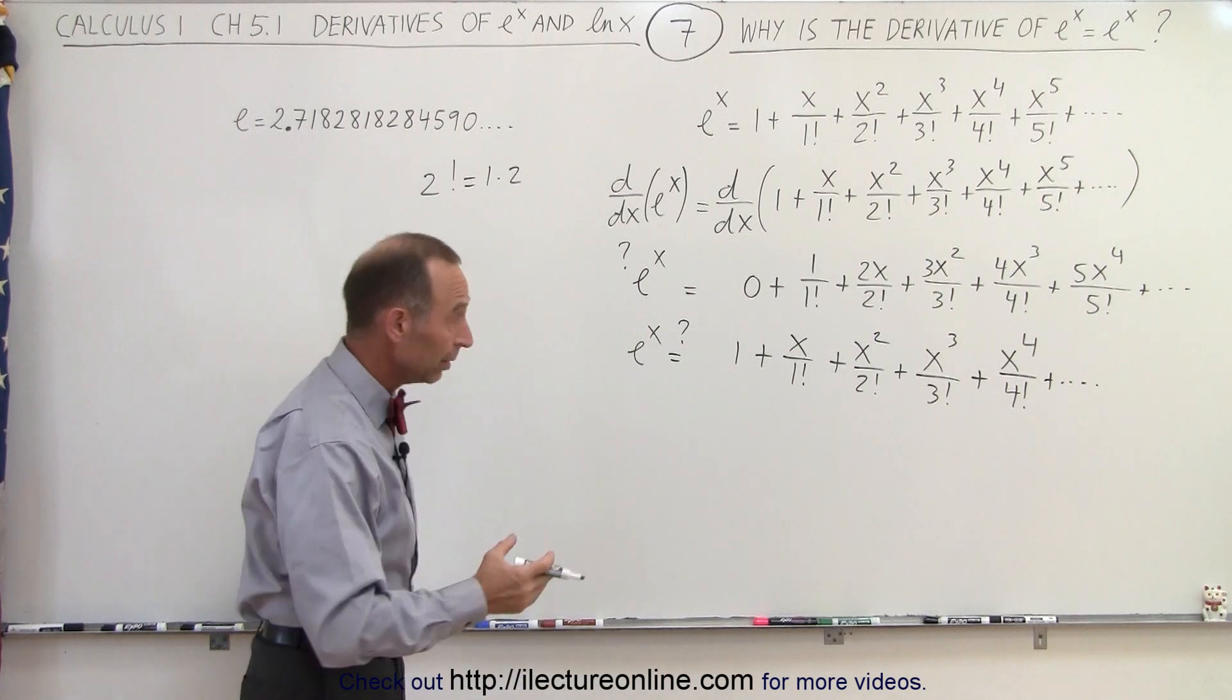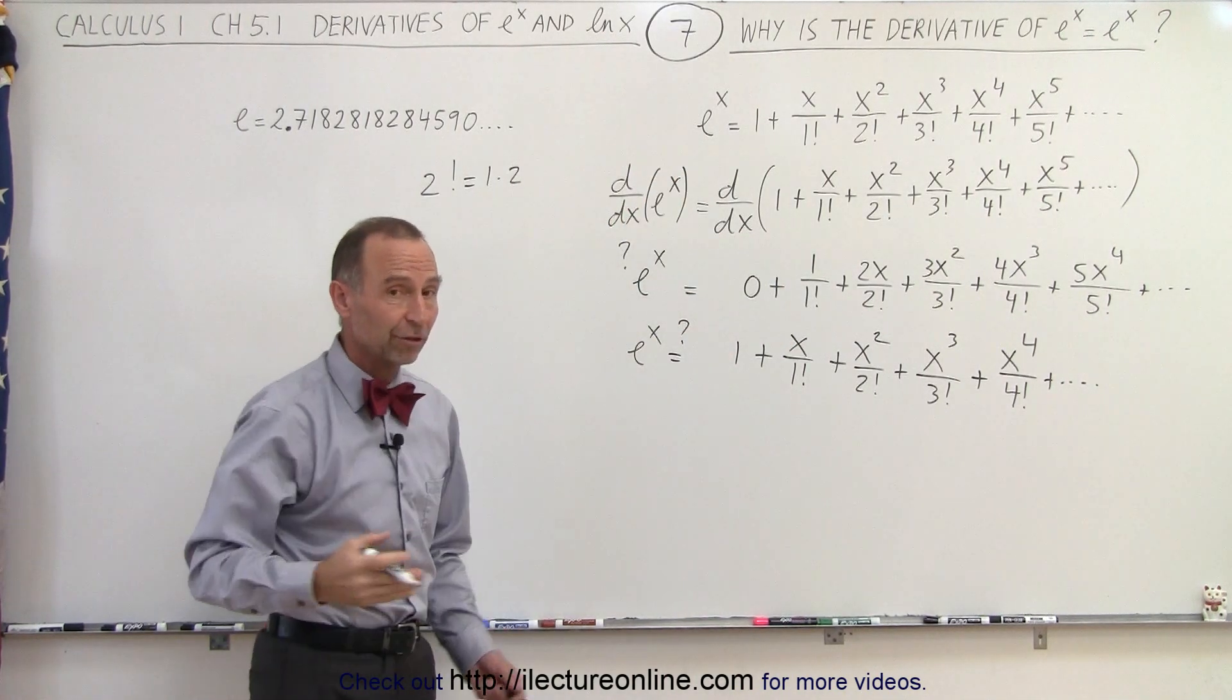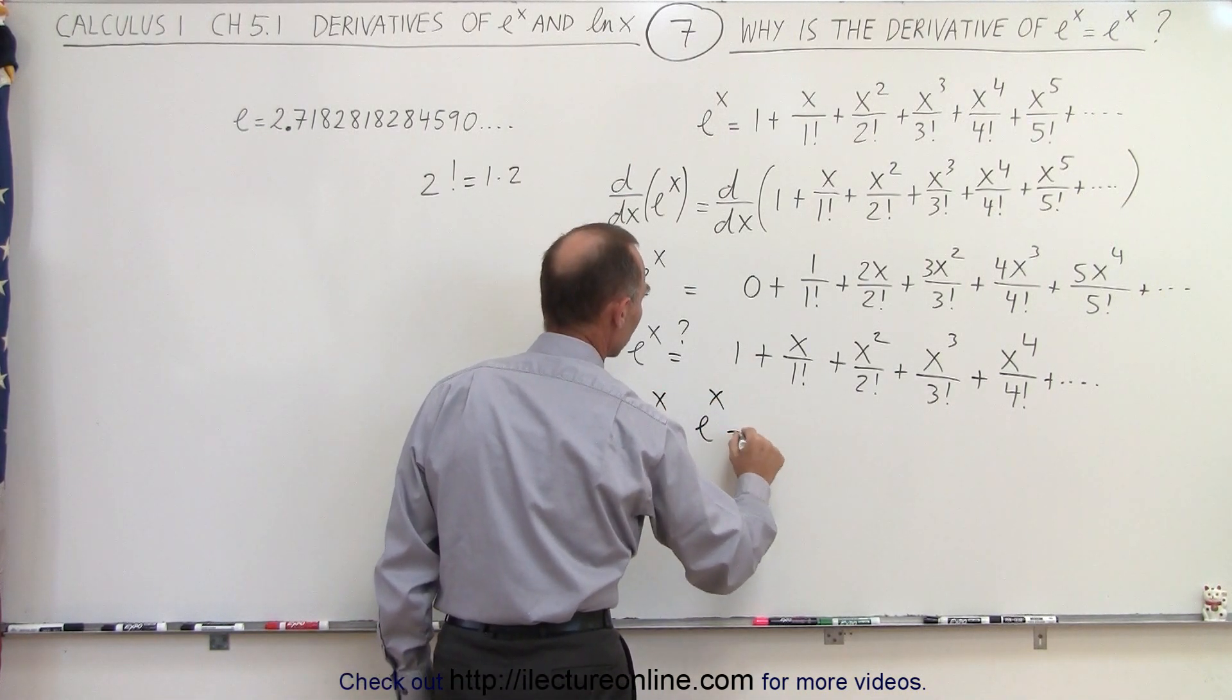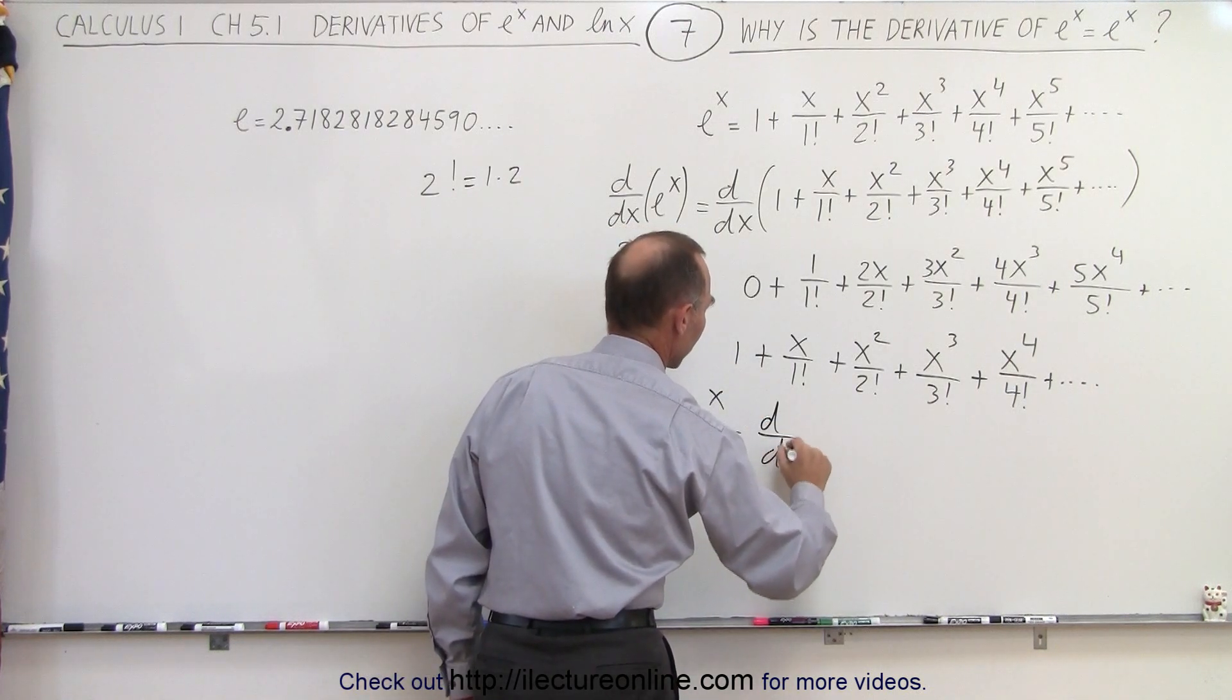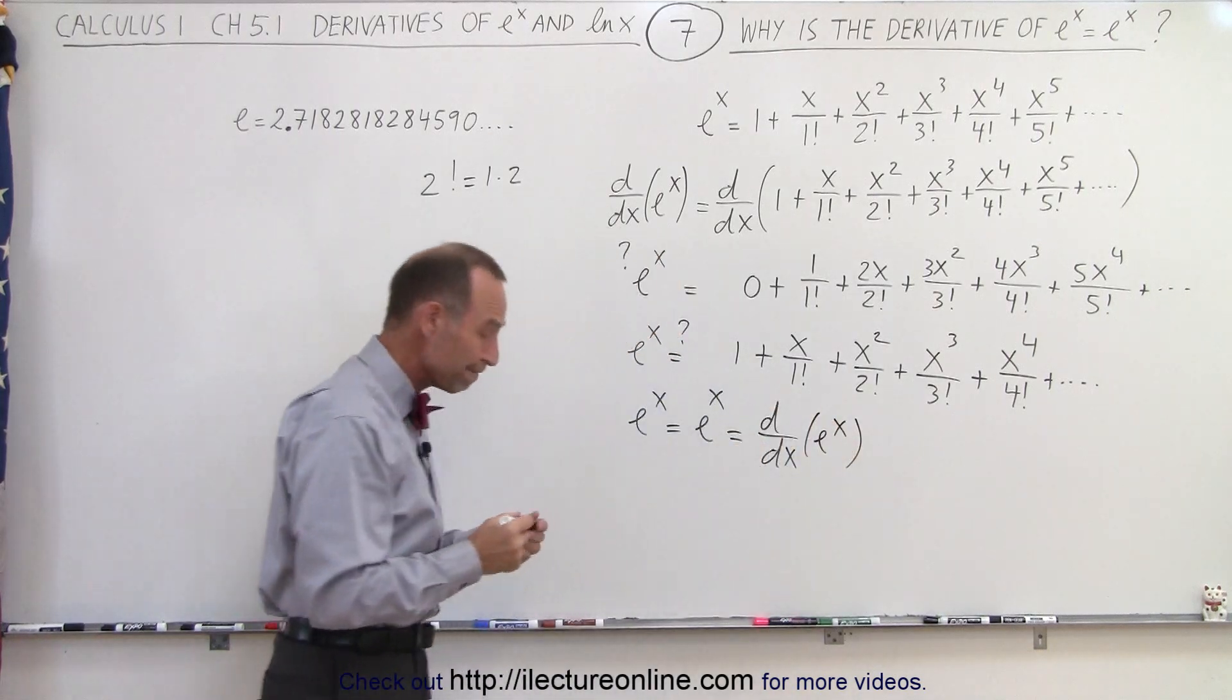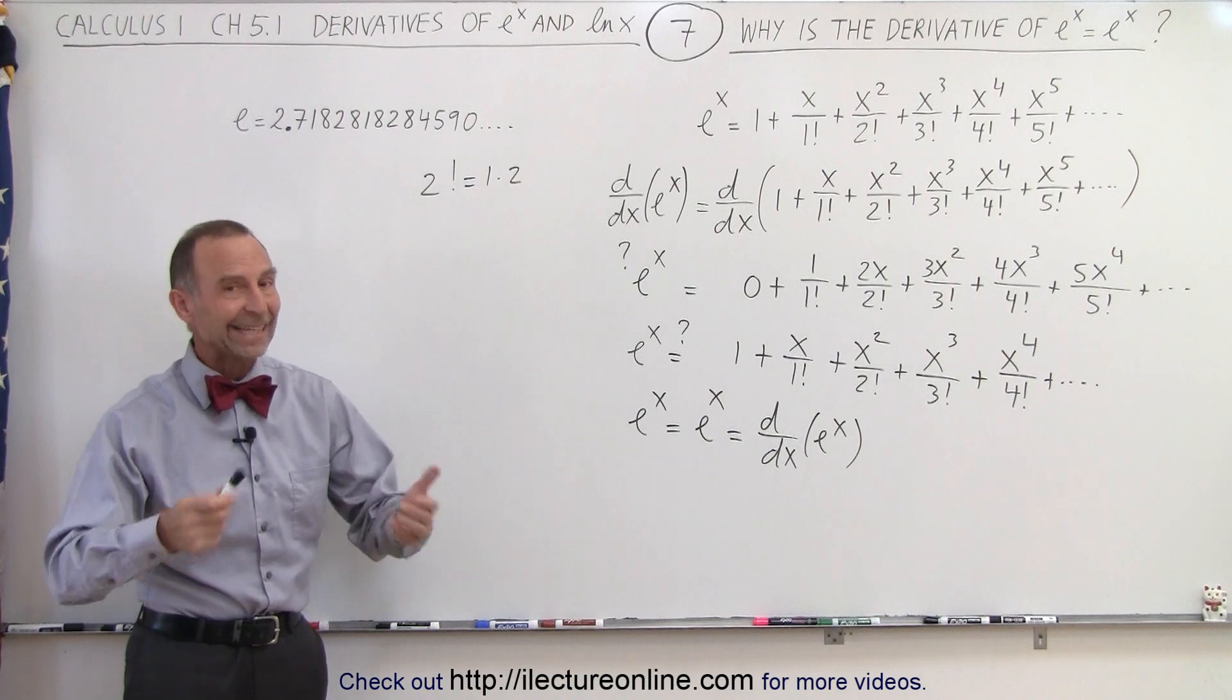What I have on the right side is exactly what I started with as a definition of e^x, so therefore, e^x is indeed e^x, which has been proven to be equal to the derivative with respect to x of e^x. So you can see, it does indeed work, the derivative of e^x is indeed e^x.